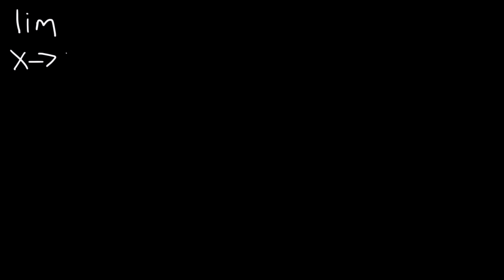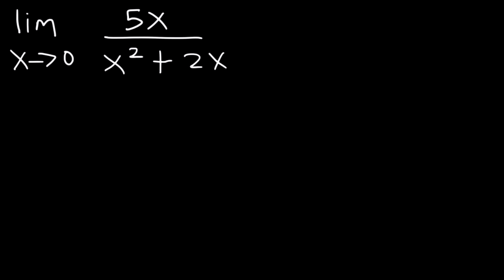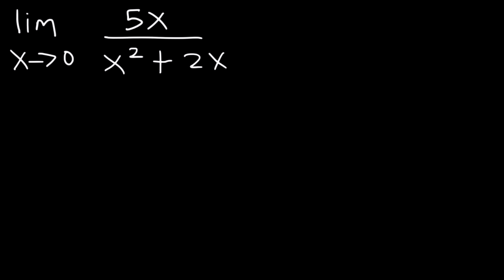Let's try this problem: what is the limit as x approaches 0 of 5x divided by x squared plus 2x? We can't use direct substitution here because if we plug in 0 we're going to have 0 divided by 0, which is indeterminate. So instead we can evaluate this limit analytically by factoring.